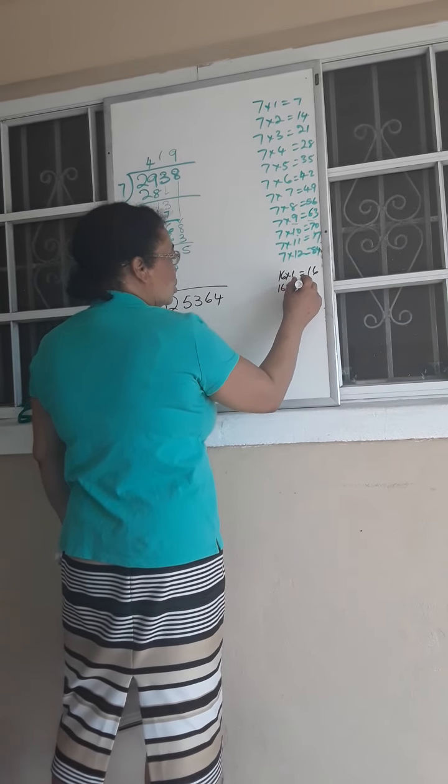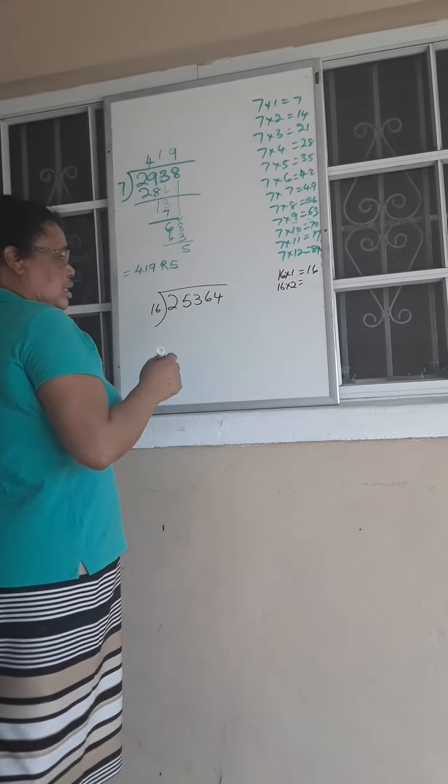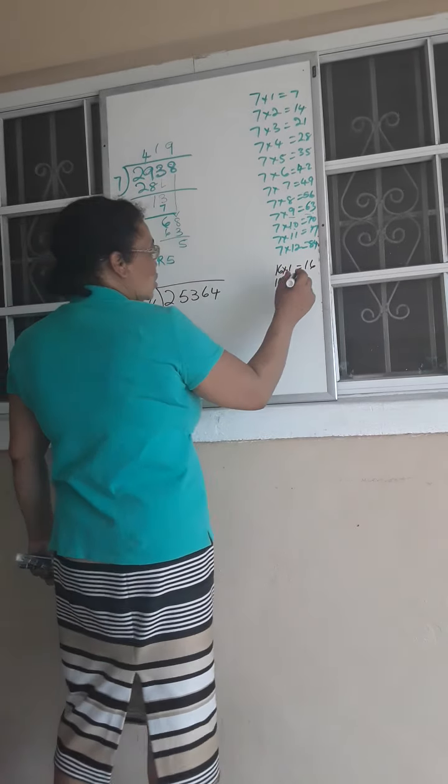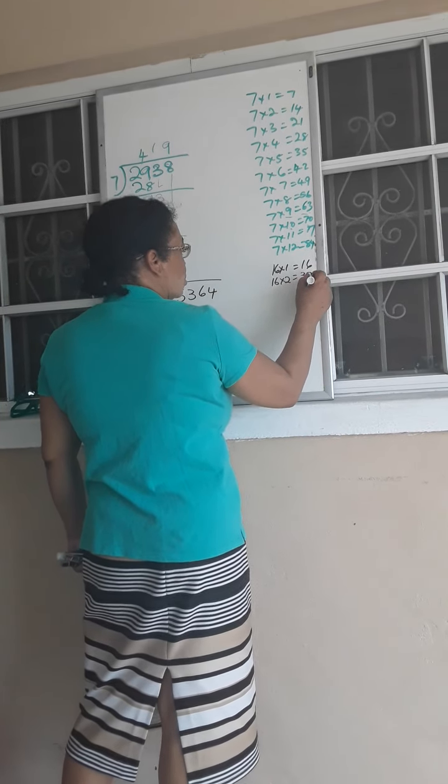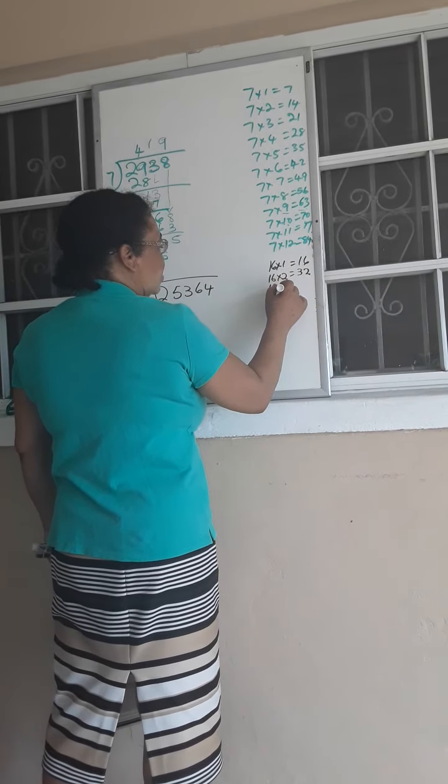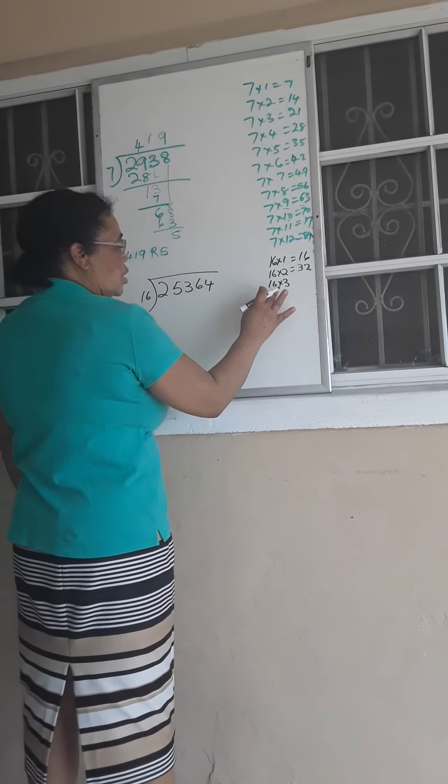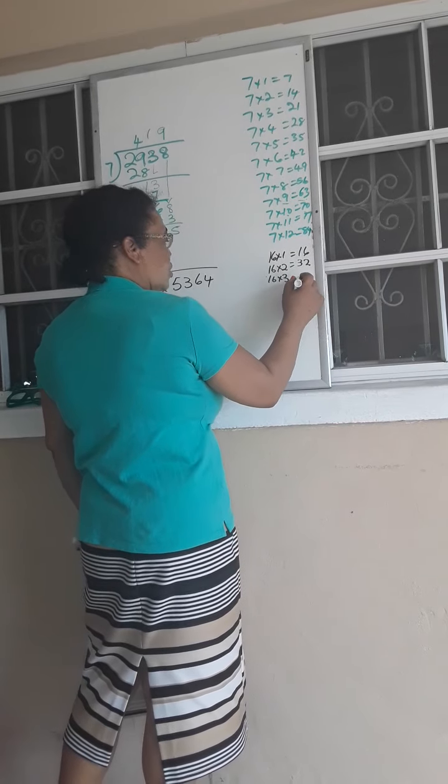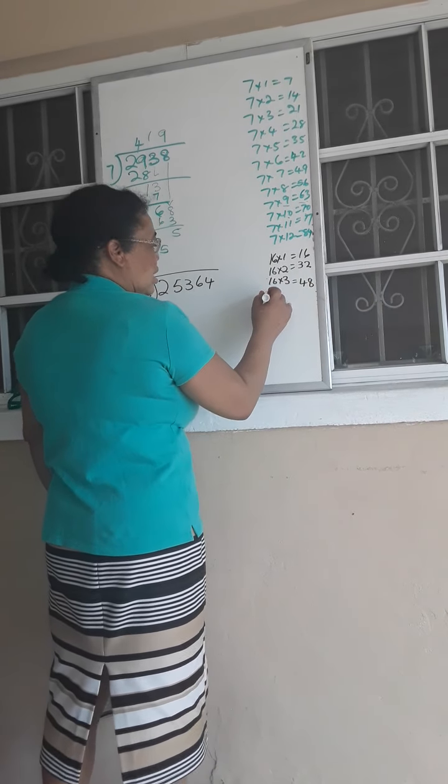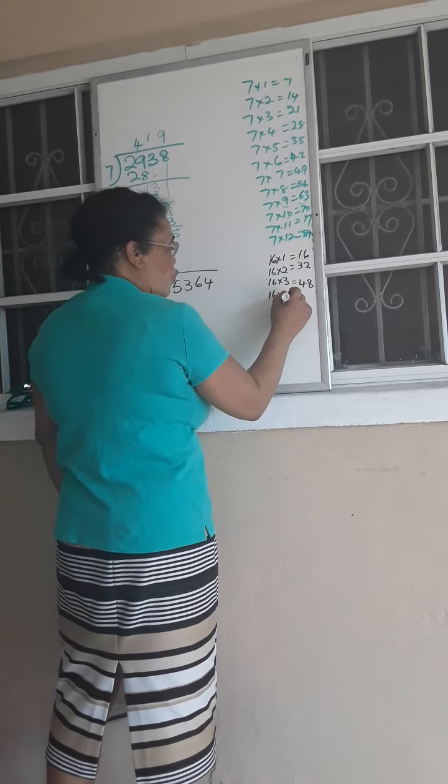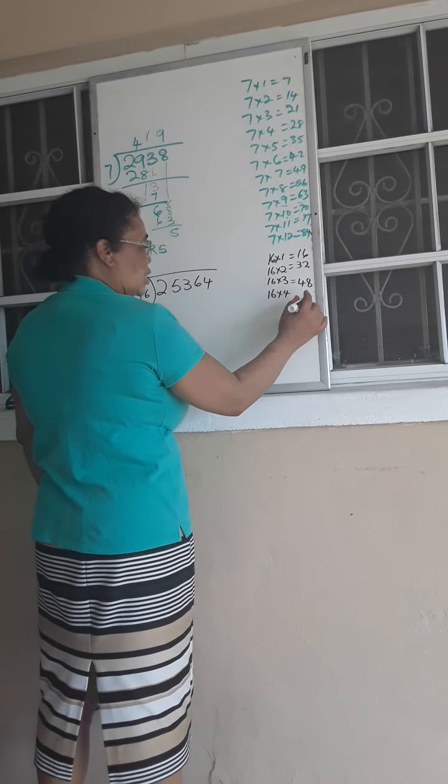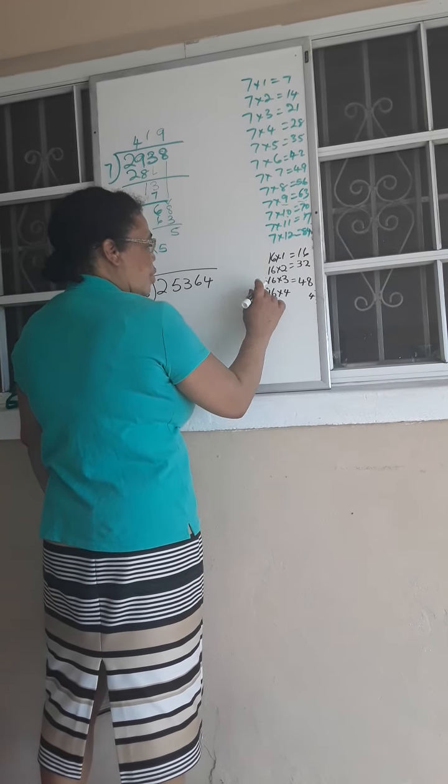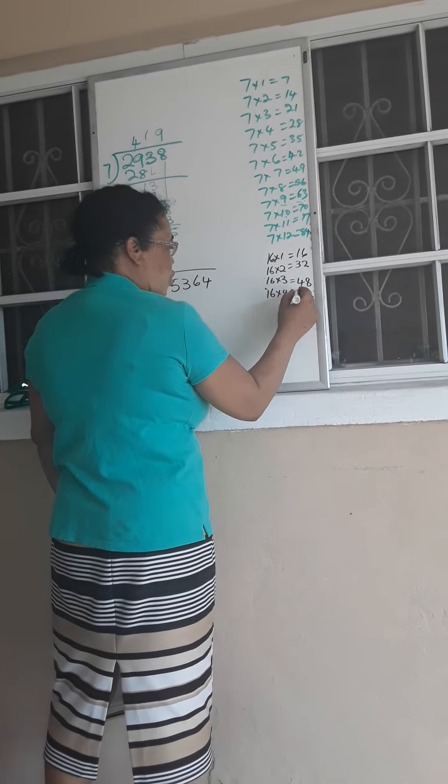16 times 1 is going to be 16. 16 times 2 is going to be 16 plus 16, which is 32. 16 times 3 is going to give me, 3 times 6 is 18, 8 carry 1, 3 times 1 is 3 plus 1 is 4, so 48. 16 times 4 is going to give me, 4 times 6 is 24, 4 carry 2, 4 times 1 is 4 plus 2 is 6, so 64.